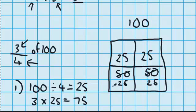And I can check that on my picture. 25 plus 25 is 50. Plus another 25 is 75. And that's 3 quarters.